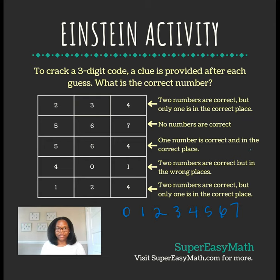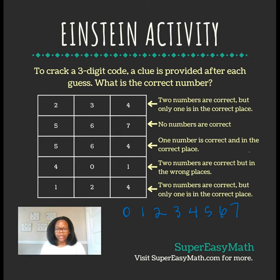I'm going to work through the clues and see what numbers I can cross off and figure out where I can position them. The first clue says two numbers are correct but only one is in the correct place. That's good to know, but I can't narrow anything down for sure from that clue alone.